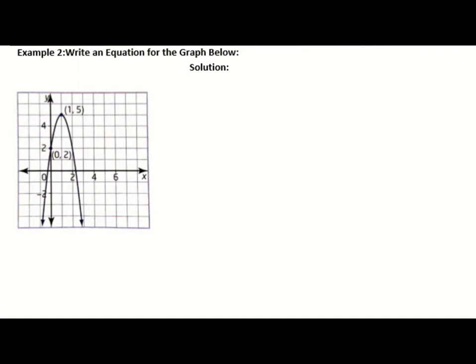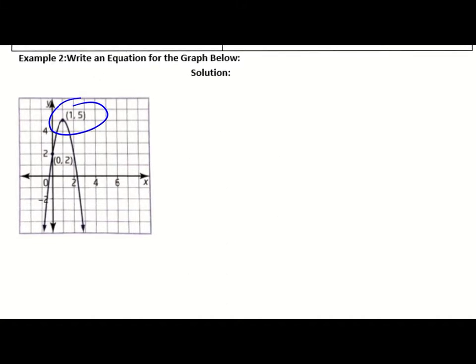We're asking to write an equation for the graph below. The key point in this graph is the vertex. The vertex in this case is 1. What I'll do is I'm going to keep track of what we're given here. We are given the point, which is our vertex, 1, 5.